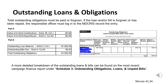For a more detailed breakdown of outstanding loans and bills, the committee can find this information on the last page of the most recent campaign finance report under Schedule 3, Outstanding Obligations, Loans, and Unpaid Bills. A political committee must make every effort to repay the debt. If the political committee, due to extenuating circumstances, is unable to pay the debt, the political committee may close only after producing documentation satisfactory to the state board of the committee's inability to pay.